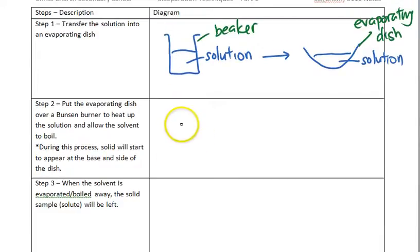We put the evaporating dish over a Bunsen burner to heat up the solution. We put it up over a Bunsen burner. So evaporating dish, the solution. We heat it up using a Bunsen burner, using a gas hole and flame.